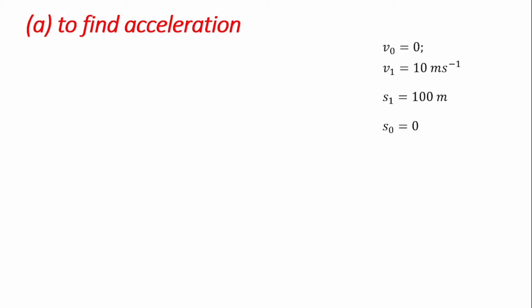We start by answering the first question: determining the acceleration of the vehicle. We bring out all the given items and enlist our formulations, starting from the first equation of motion — V1 equals V0 plus A·t. The question becomes: can this solve our problem? We have V1 and V0, but we don't have acceleration and we don't have time. Because we have two unknowns, this may not be the best formula to use to find the acceleration.